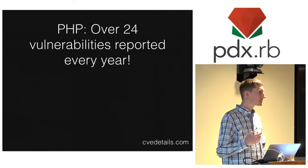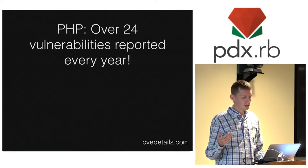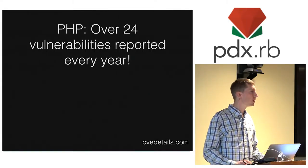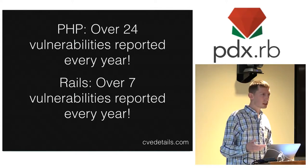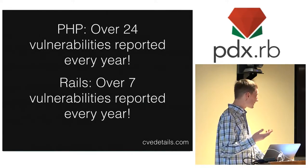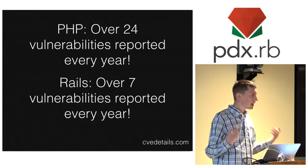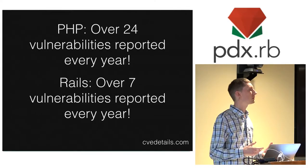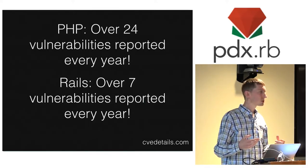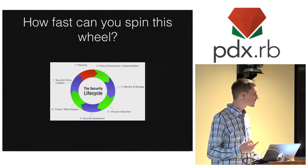This is Ruby, so we might as well rag on some other language first. PHP has had on average over 24 vulnerabilities reported every year in their total existence. We're talking about Ruby and Rails, which is just one framework in Ruby, and it has had over seven vulnerabilities on average each year. Given that, it can take a good amount of developer time to track down, audit source code and gems, find where there are vulnerabilities, patch them, test them, deploy them — it becomes a question of how fast you can spin this wheel.